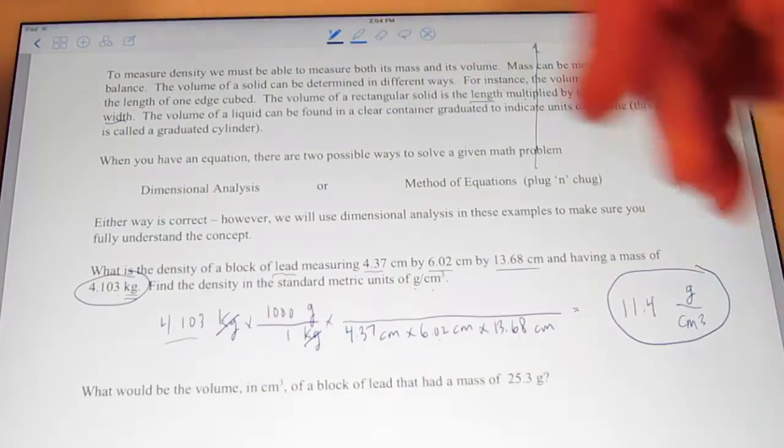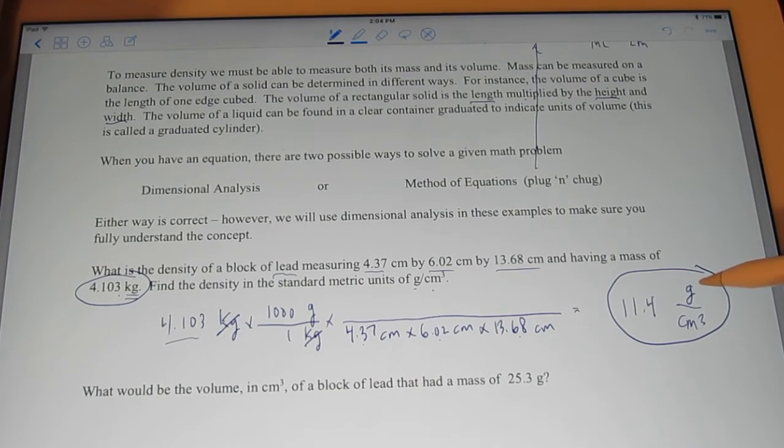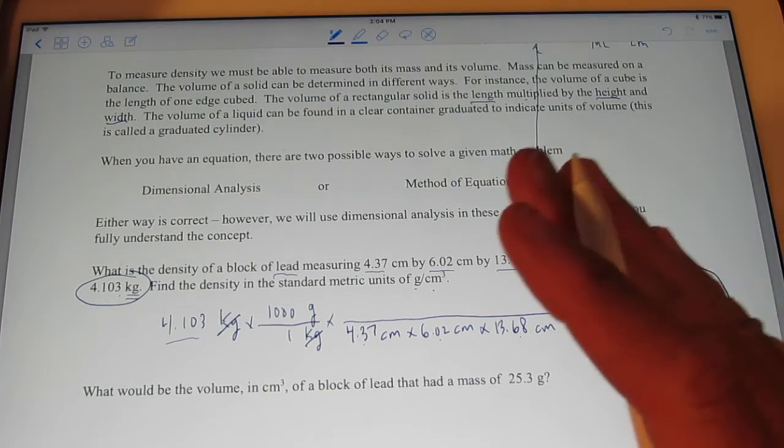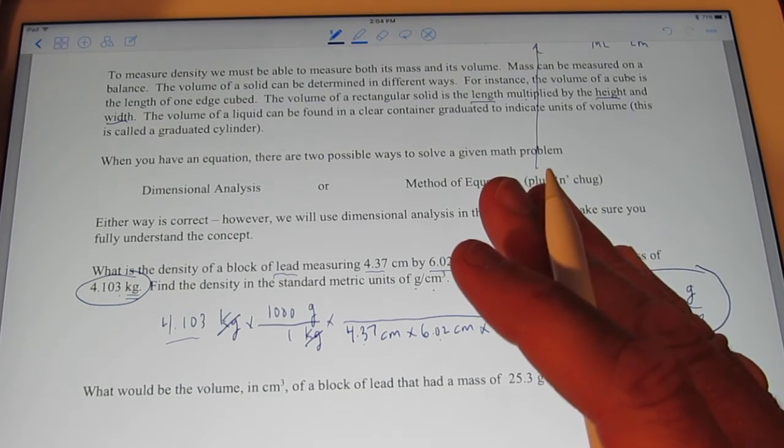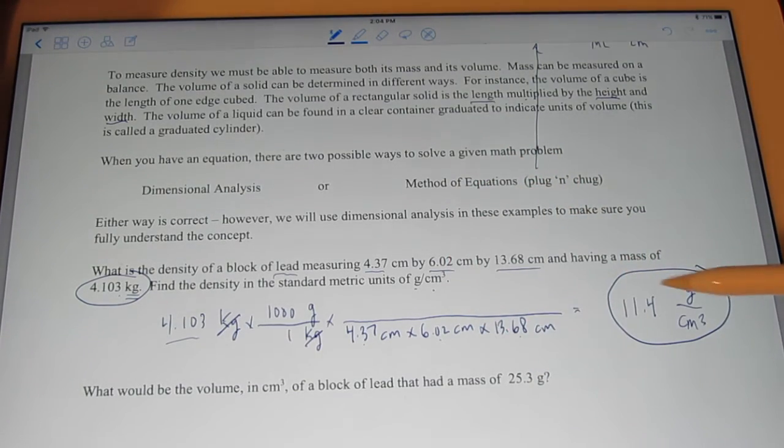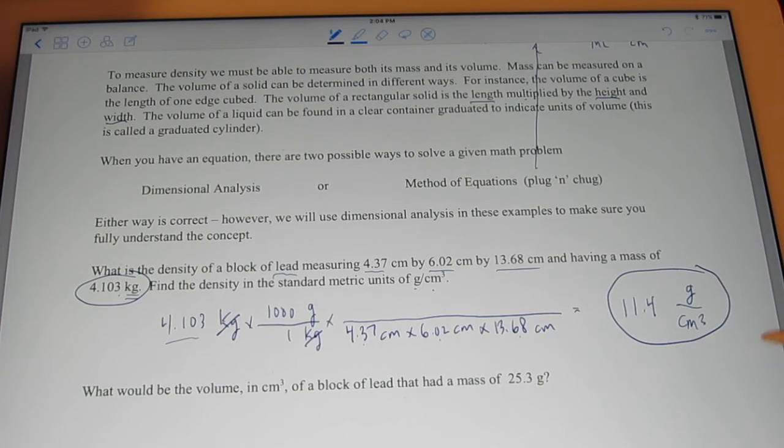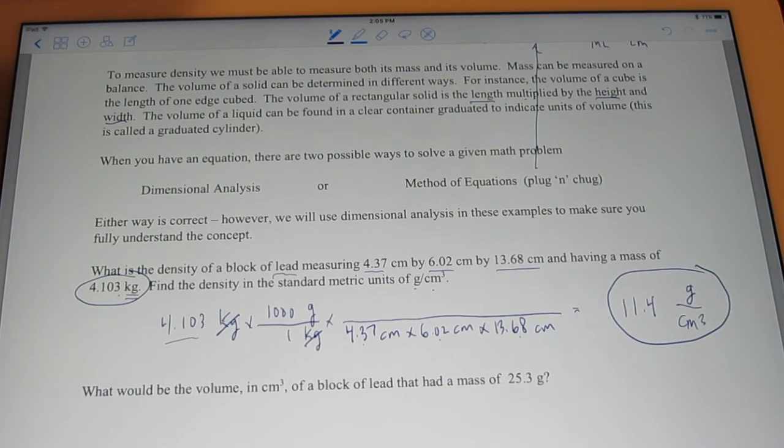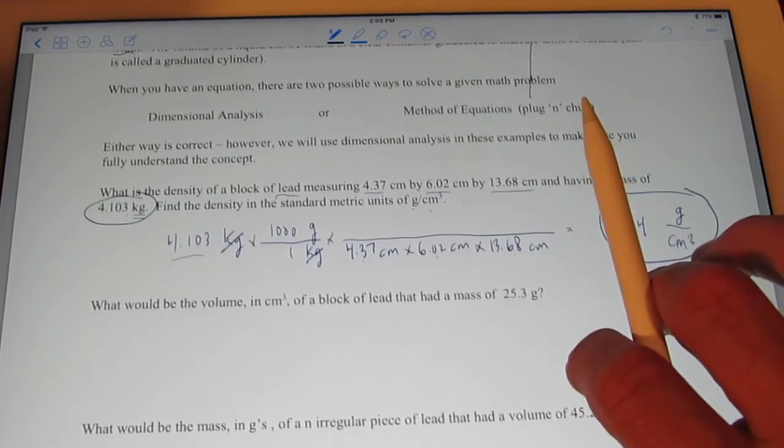Well, now that we know the density of that block of lead, can't I use density as a conversion factor? Think about it. For every piece of lead that's a cubic centimeter in volume, won't it have a mass of 11.4 grams? That's a conversion factor. 11.4 grams of lead per cubic centimeter. So, I can use this density as a conversion factor. Watch, let me do the next problem.